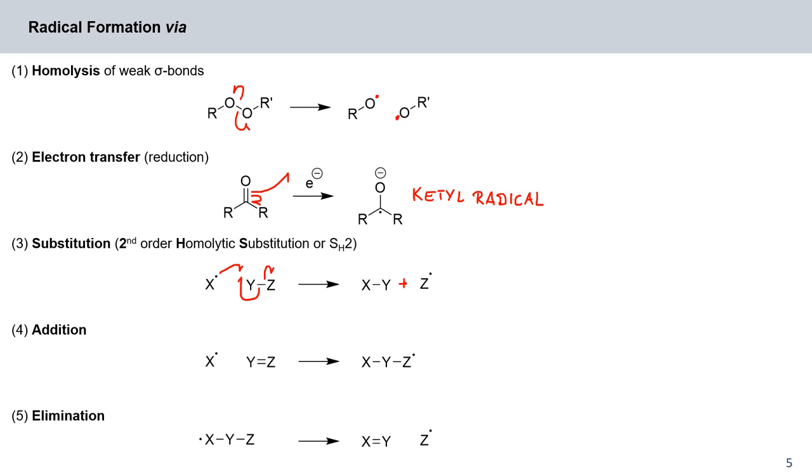Or we can add a radical to a double bond, for example, between Y and Z. And the other electron from that Y and Z double bond goes then onto our Z. So we've essentially added this radical X to our double bond and generated a new radical center.